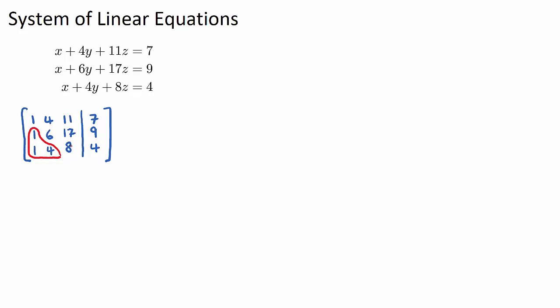And the reason why we want to do that is because if these become zeros, on our bottom line, we're essentially going to have the coefficient of z. And we can solve for z, and therefore help us solve for y, which helps us solve for x. So we can work backwards and solve all of the unknowns. So that's going to be our goal.